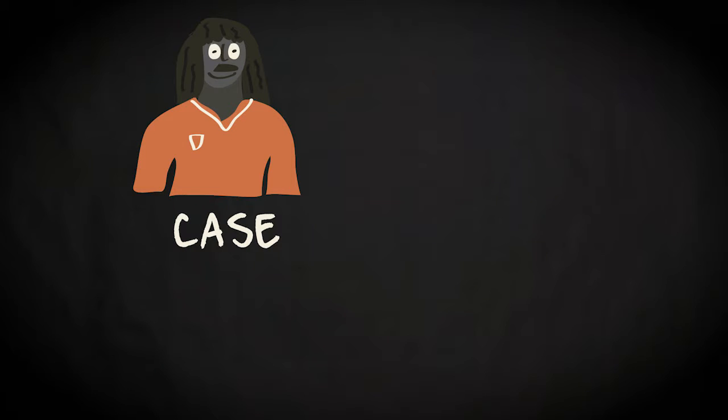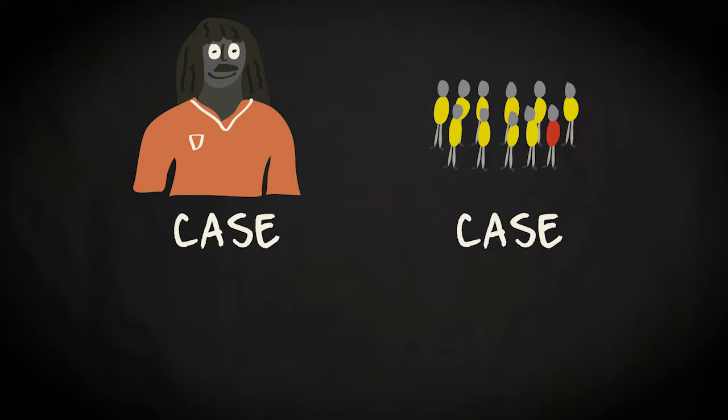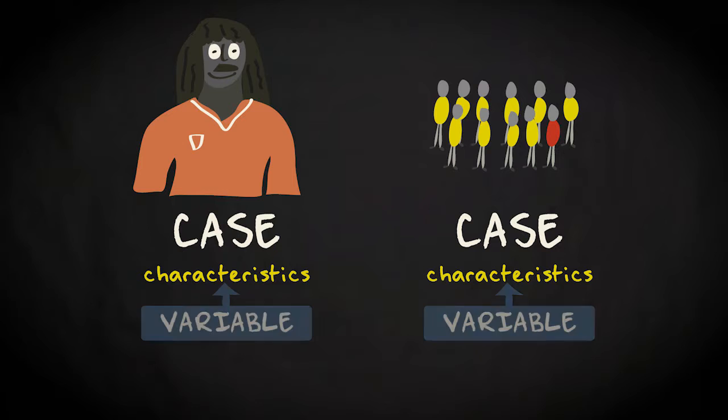In a study, cases can thus be many different things. They can be individual football players and football teams, but they can also be, for instance, companies, schools, or even countries. Every characteristic of a case can be called a variable, as long as it meets one essential criterion: it needs to vary.